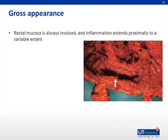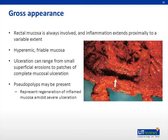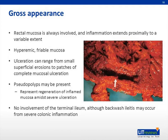In ulcerative colitis, the rectum is always involved with inflammation extending proximally in the colon for a variable extent. The gross appearance of the affected bowel is characterized by hyperemic friable mucosa, as shown in the picture. Ulceration can range from small superficial erosions to complete mucosal ulceration. Pseudopolyps may be present, which are areas of regenerating mucosa amidst surrounding severe ulceration. Generally, the inflammation is limited to the colon and the terminal ileum is unaffected, although backwash ileitis may occur from adjacent colonic inflammation. Finally, foci of cancer may be found amidst the inflammatory milieu.